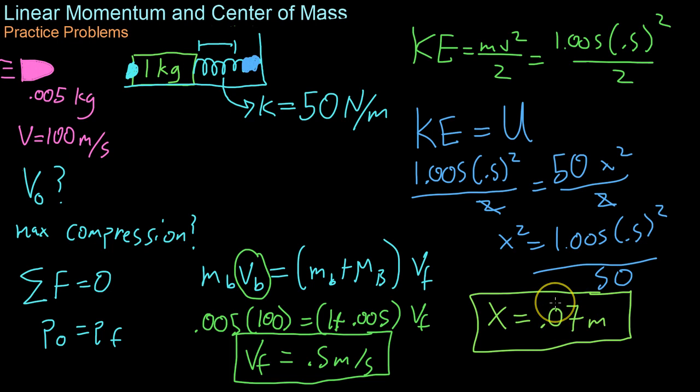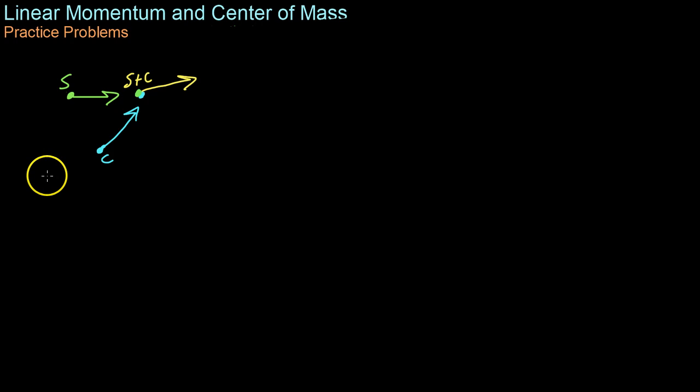Now we'll do one last momentum practice problem before we move on to our video on the concept of center of mass. So for the most part we've been looking at equations for momentum in one dimension, just because it makes things simpler. But now we'll look at a 2D problem. In this case, we have particles S and C with their initial velocities Vs and Vc, and then they combine and have some final velocity we'll call Vf. And what we want to do is solve for Vf.